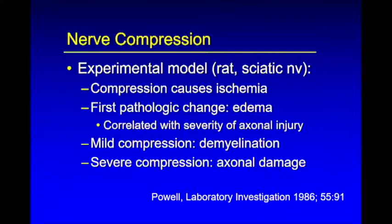With this experimental model, compression causes ischemia. The first thing you see will be edema, and the edema will correlate with the degree of axonal injury, which also involves demyelination. Note that inflammation is really not part of this, so the term neuritis is somewhat of a misnomer. It's really edema, ischemia, and then axonal damage with demyelination.